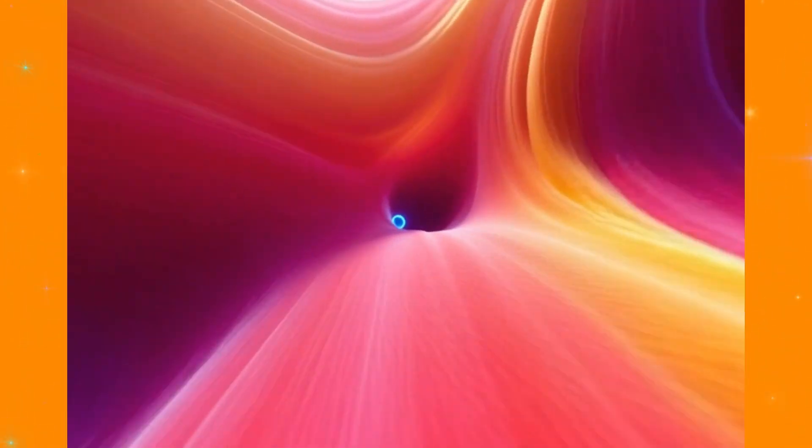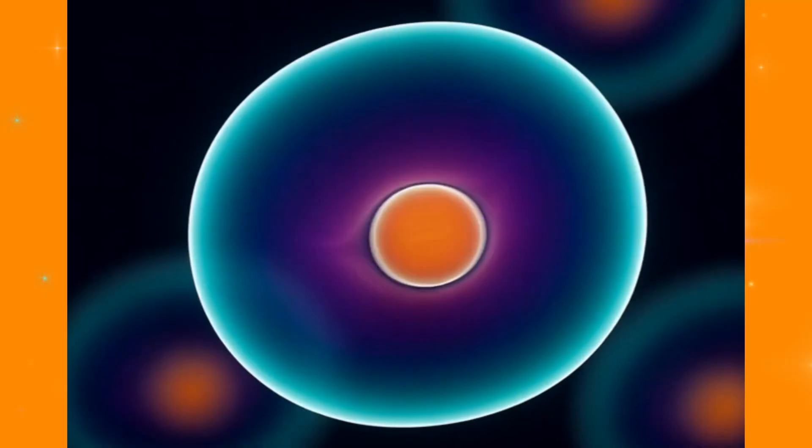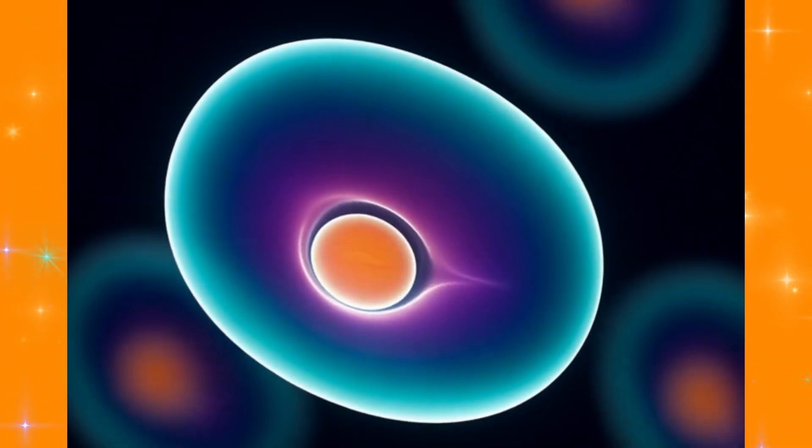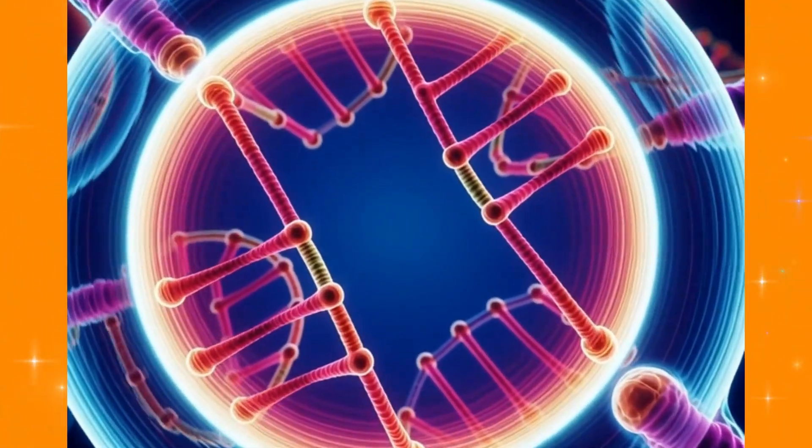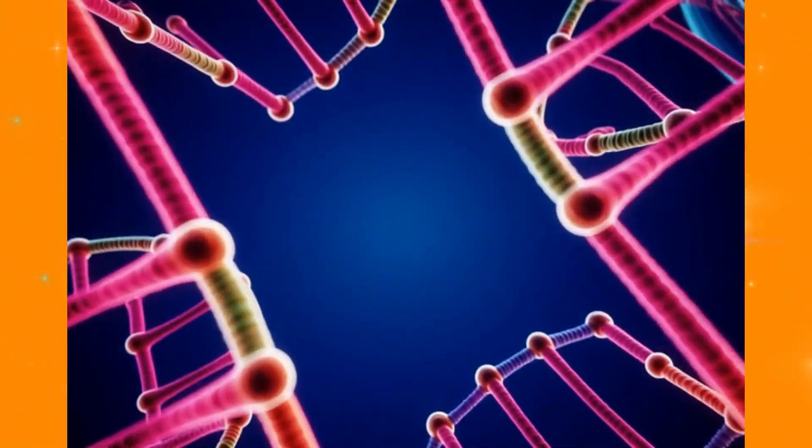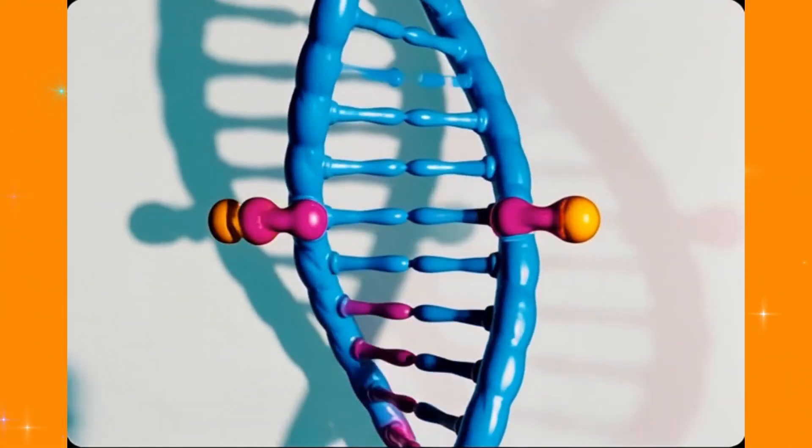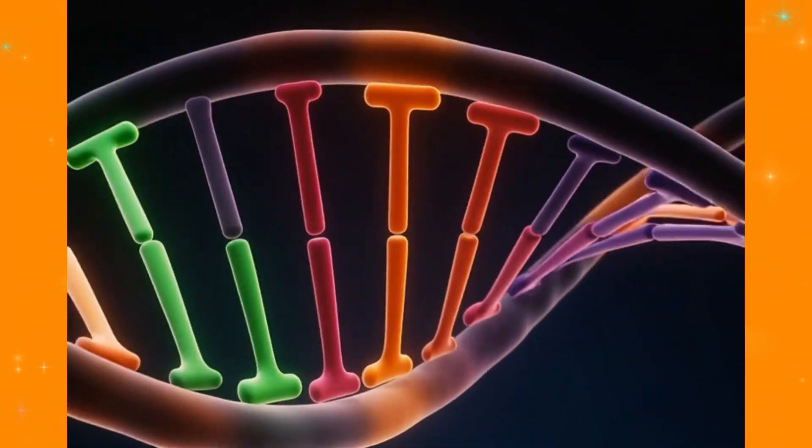Right now, inside your body, something absolutely incredible is happening. Trillions of your cells are splitting themselves perfectly in half, copying every single piece of their DNA with zero errors allowed. One mistake and you could get cancer. So, how does a microscopic blob pull off the most precise engineering feat in nature?